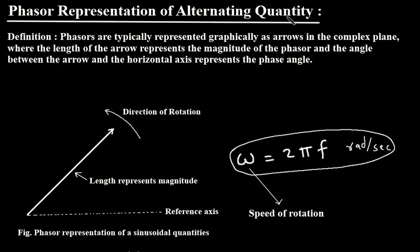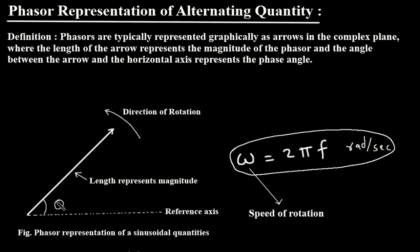Phasor representation of alternating quantity. Definition: phasors are typically represented graphically as arrows in the complex plane. This is the phasor representation of a sinusoidal quantity. The length of the arrow represents the magnitude of the phasor, and the angle between the arrow and the horizontal axis represents the phase angle, which is represented by theta.